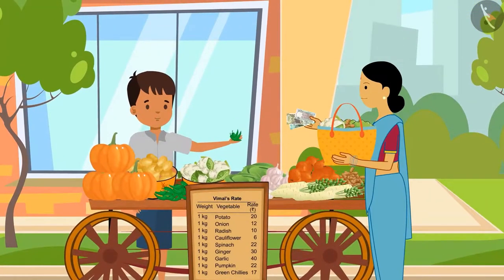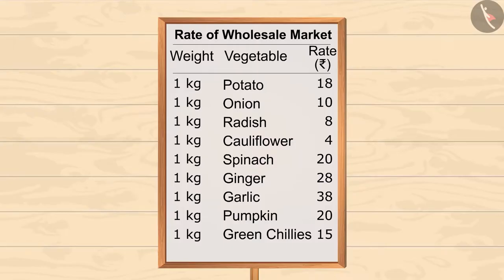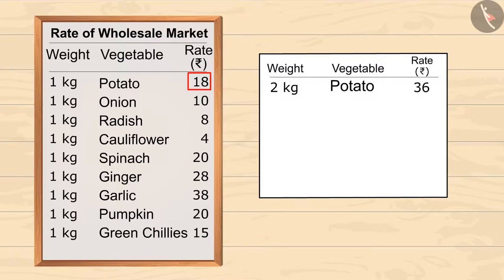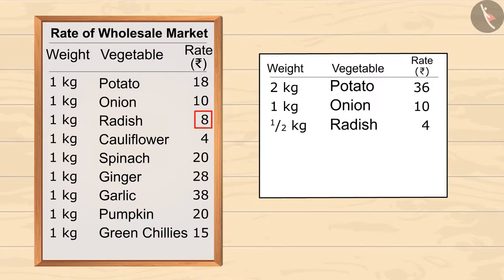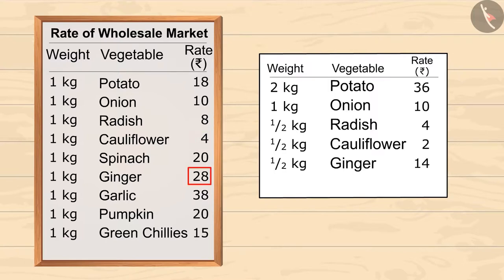Sharma auntie gave 75 rupees to Vimal. Can you guess how much profit Vimal has gained? Let's calculate together. According to the wholesale market price, Sharma auntie should give rupees 36 for 2 kg potatoes, rupees 10 for 1 kg onion, rupees 4 for half a kg radish, rupees 2 for half a kg cauliflower, and rupees 14 for half a kg ginger. The total is 66 rupees.